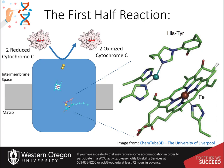The reduction of oxygen to water is achieved through a two-part reaction. In the first part, two electrons are dropped off at the complex by two molecules of cytochrome C. This reoxidizes the molecules of cytochrome C so they can pick up more electrons from complex 3. The two electrons move through the copper A cofactor, the heme B cofactor, and land in the heme A3 and copper B cofactors. This energy release causes the pumping of two protons into the inner membrane space.